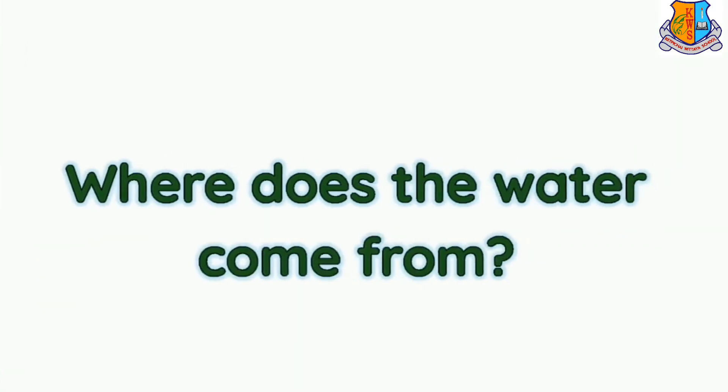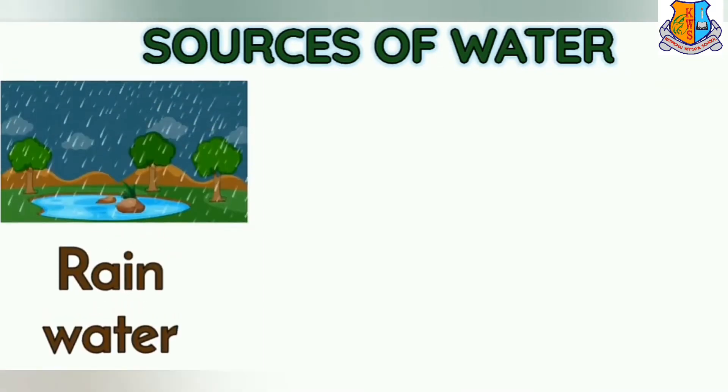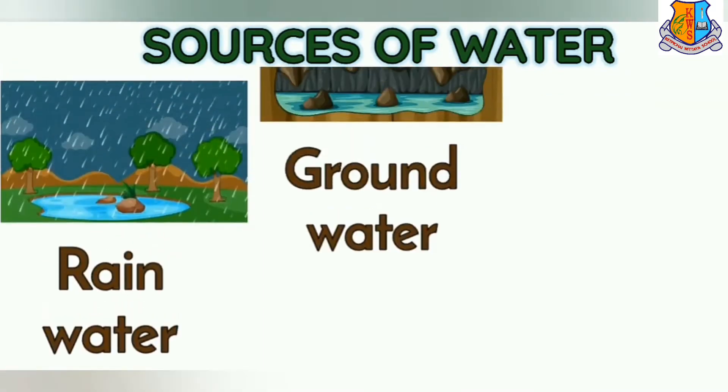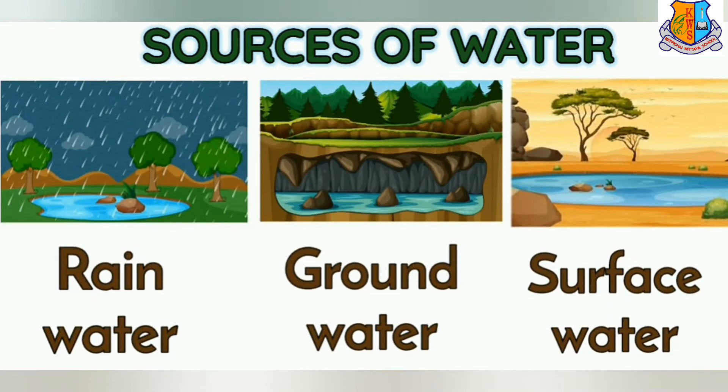Where does the water come from? Now we will learn about the sources of water. There are mainly three sources of water: Rain Water, Ground Water, and Surface Water.